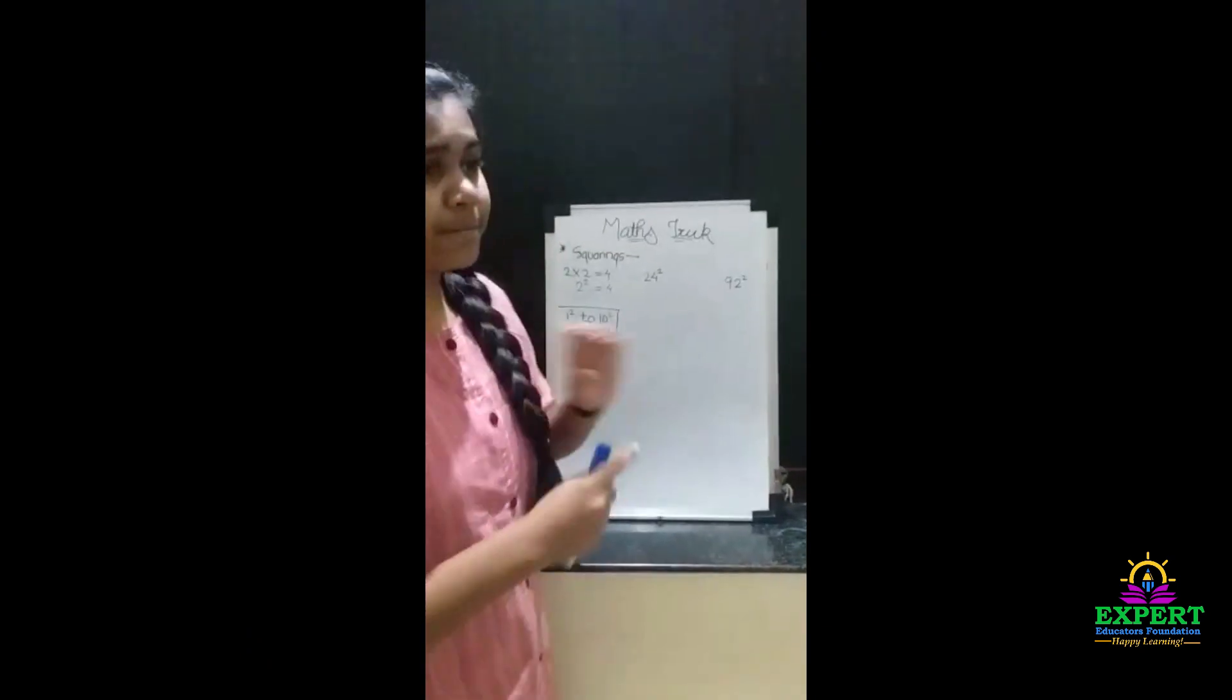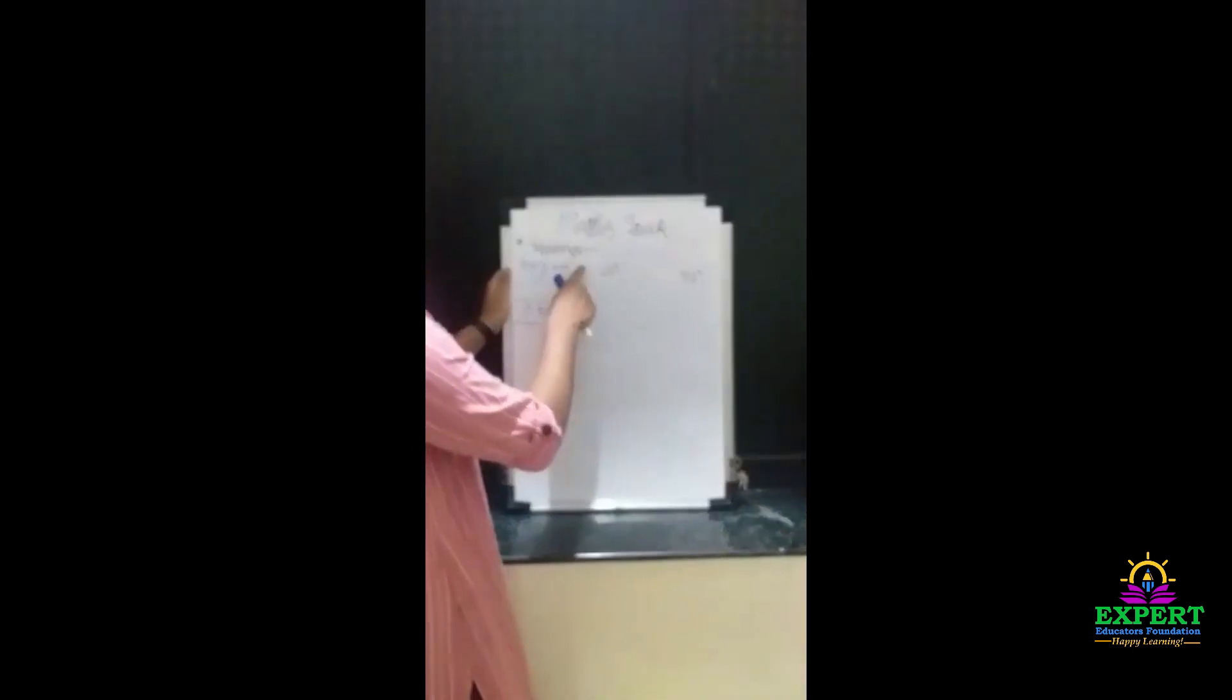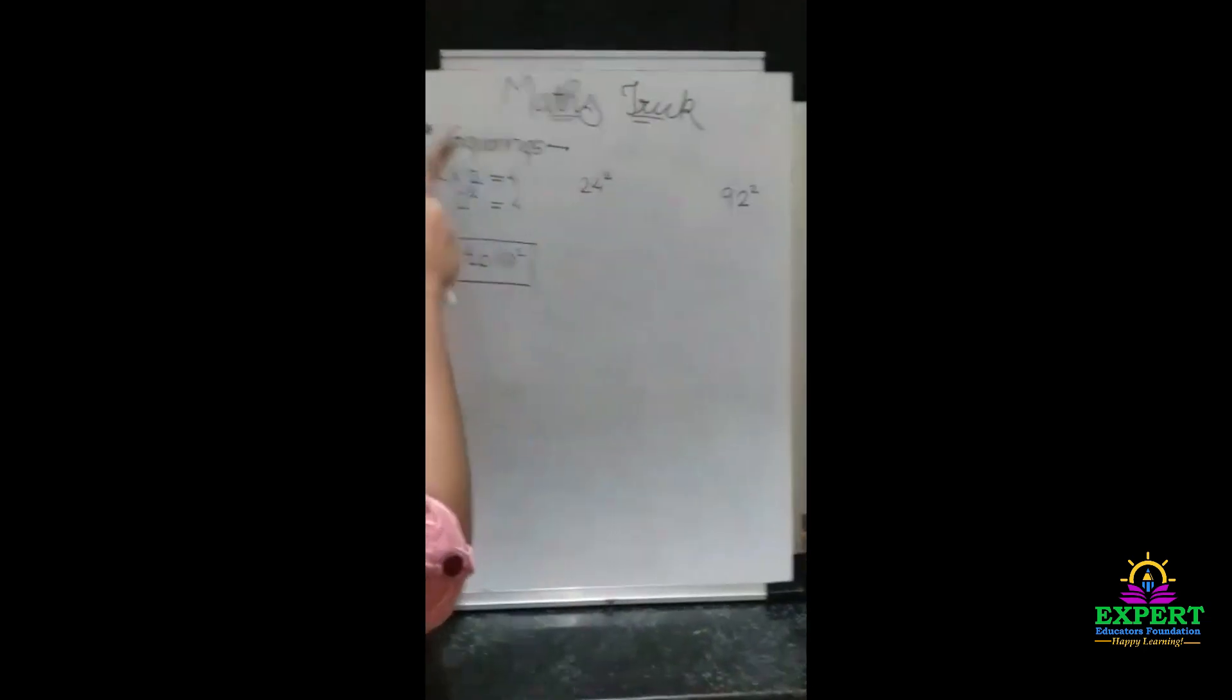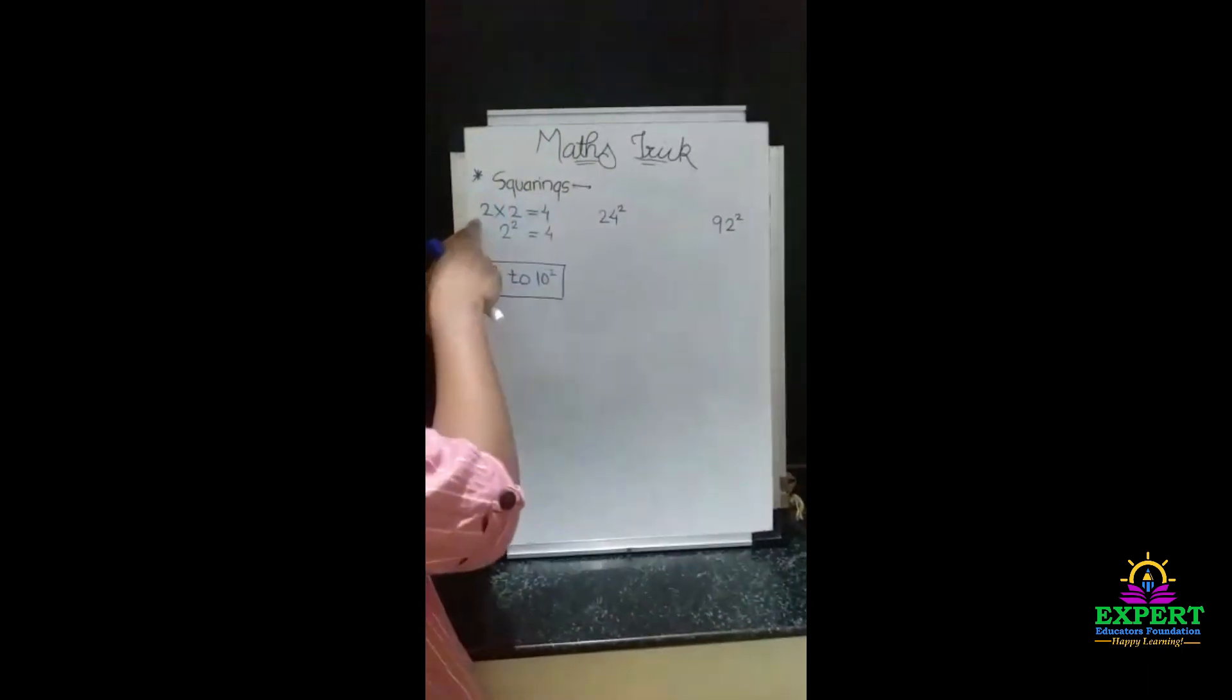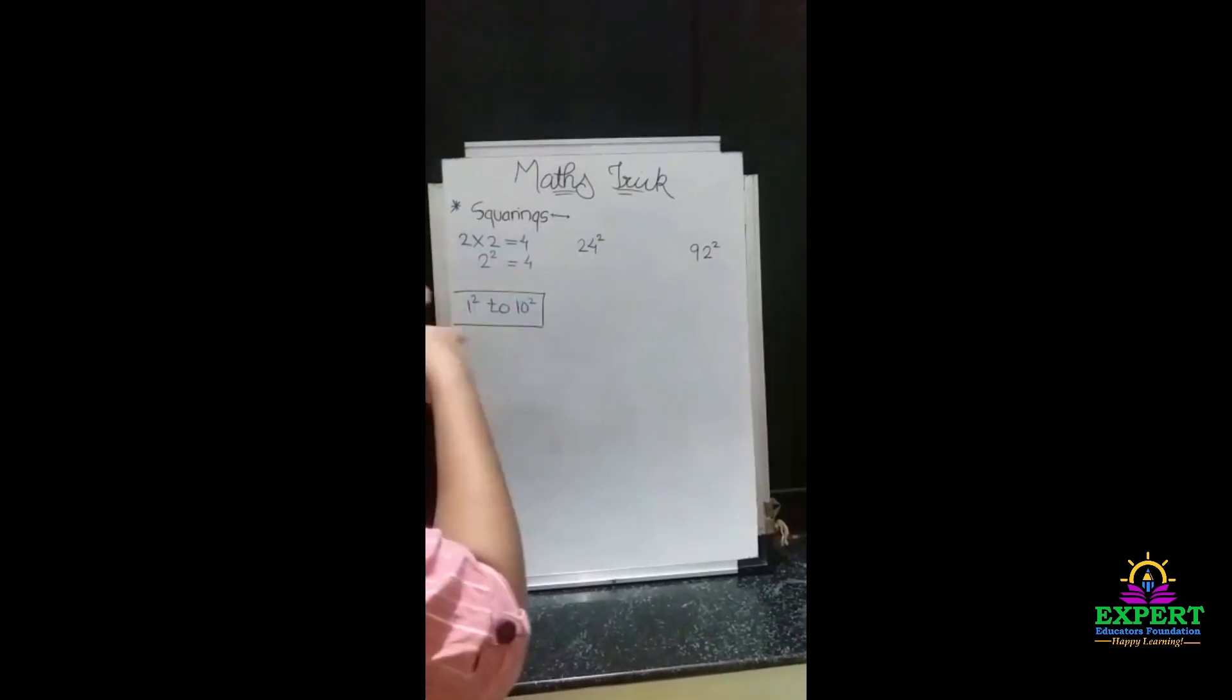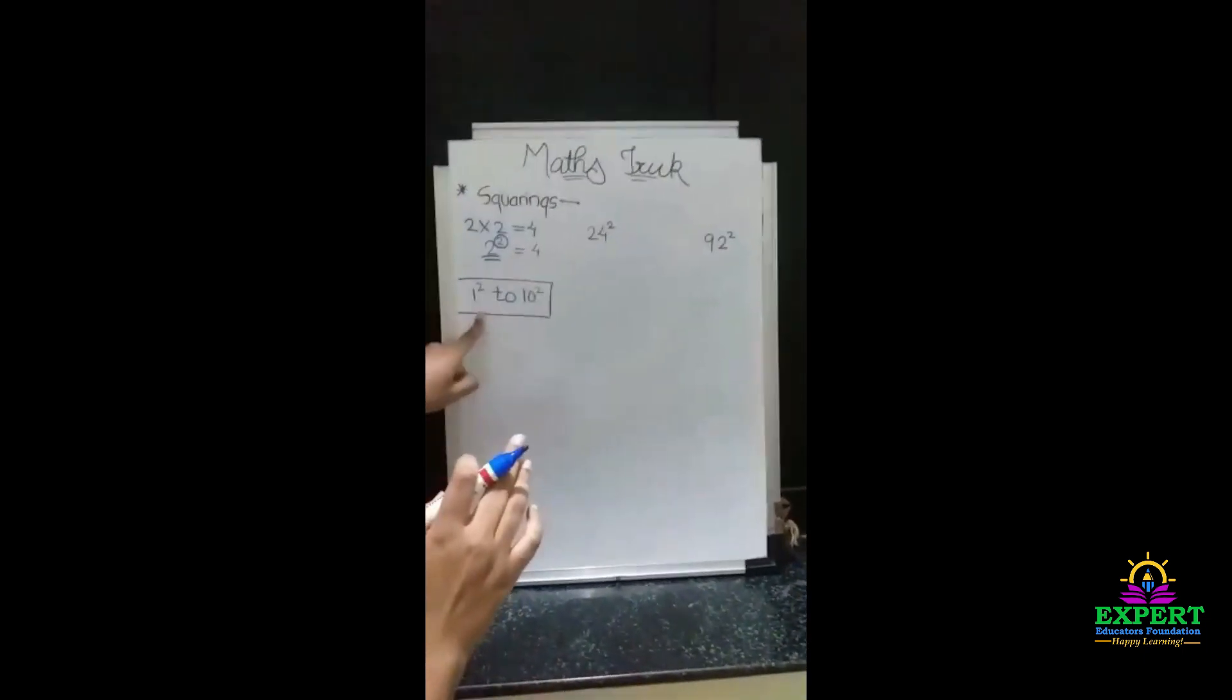It's asking in any of the exams, so first of all, what does square mean? The number which is multiplied by itself is called a square. For example, 2 into 2, that is 4. It's written as 2 raised to 2, that is 2 squared equals 4. But for this, you should know the perfect squares from 1 to 10.